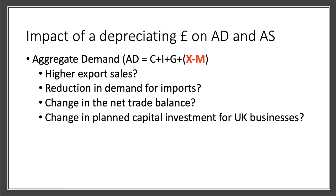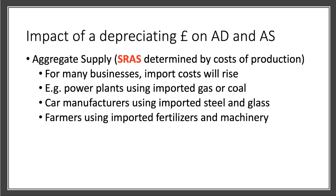The impact of a depreciating pound can affect both AD and AS. The equation for aggregate demand is C + I + G + (X - M). The X minus M is the trade balance. A depreciating pound would lead to higher export sales — the volume of exports would go up, for example tourism would benefit — and the volume of imports may go down because they're more expensive. There could also be a rise in investment if businesses are selling more overseas.